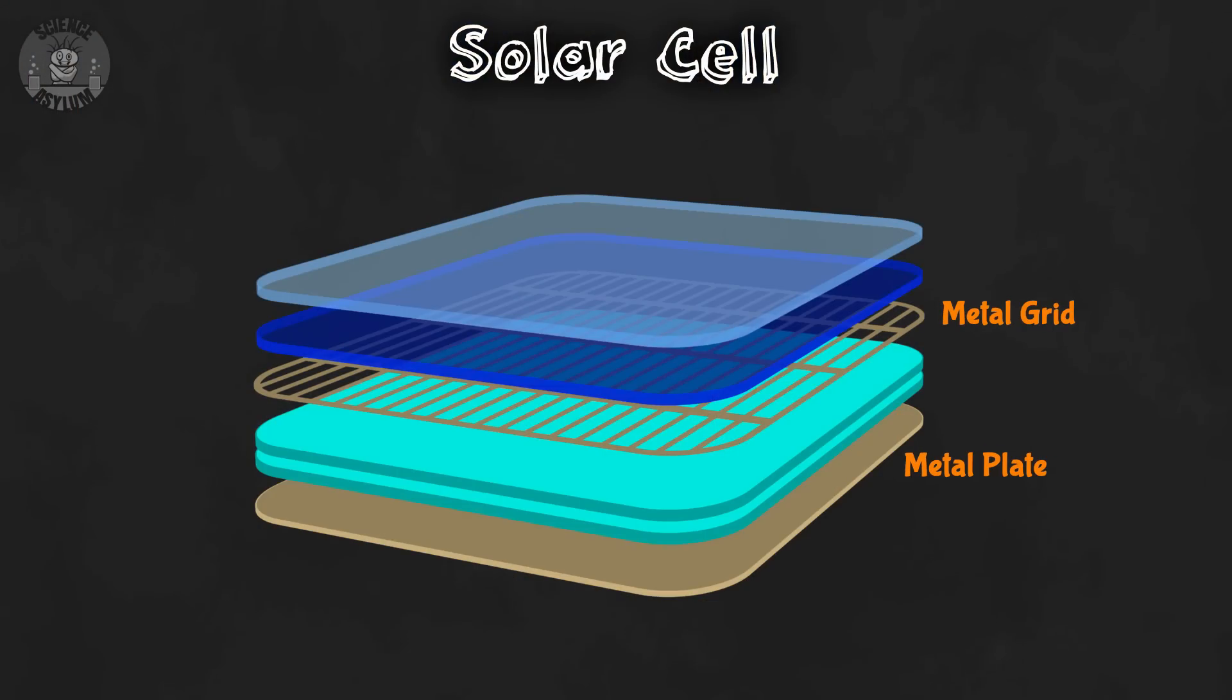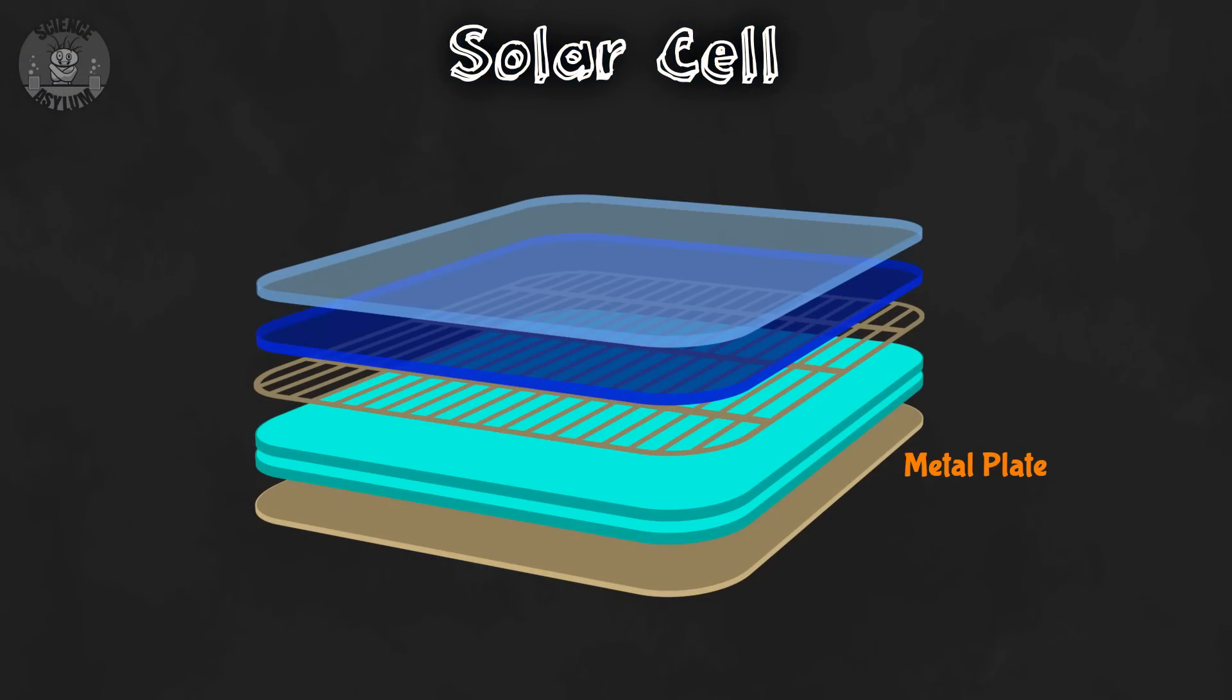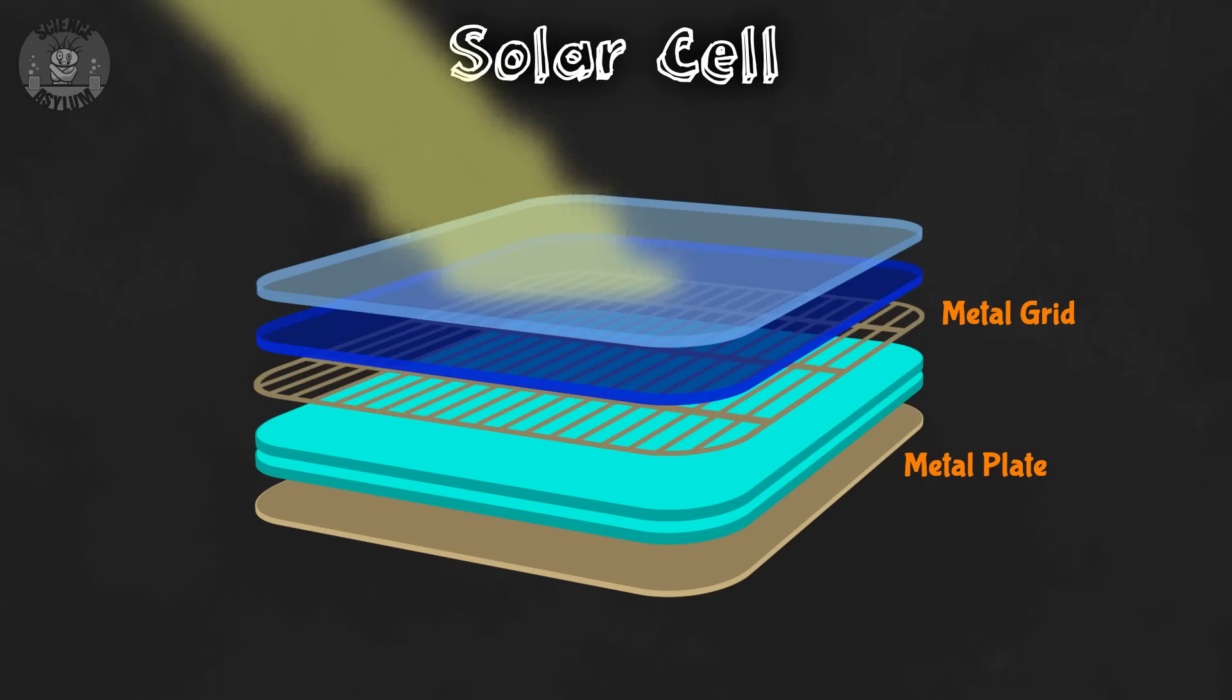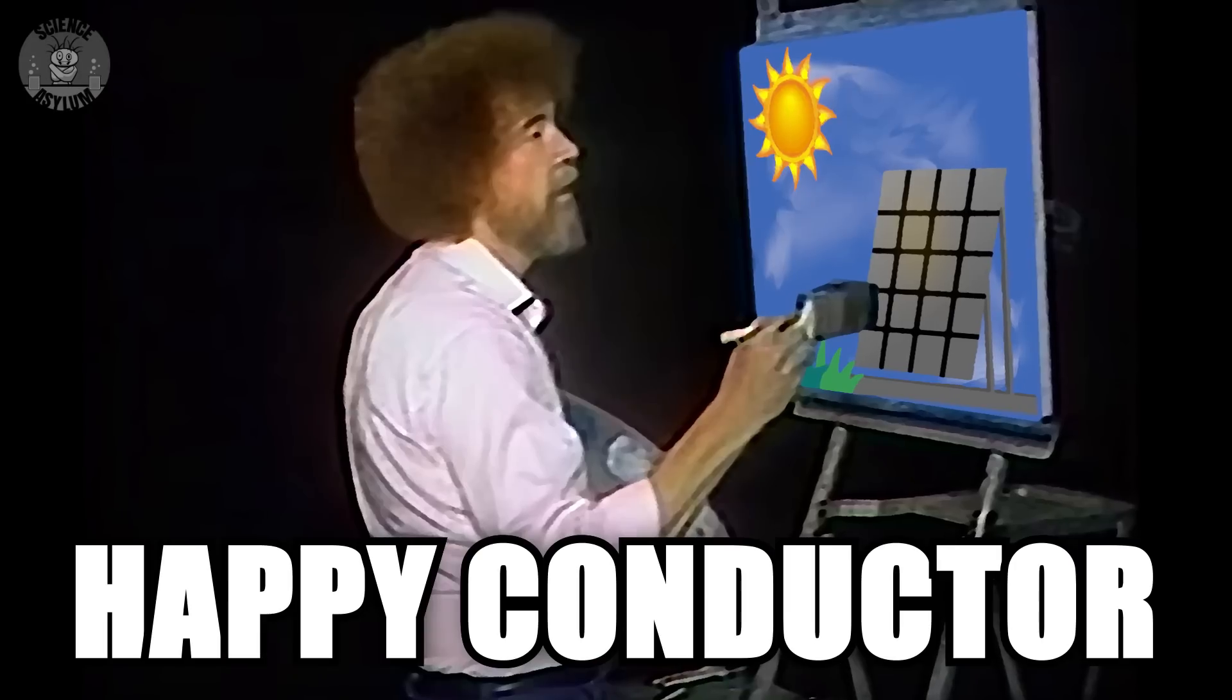We just need a couple of conductors to connect the silicon to a circuit, and bam, you've got yourself a solar cell. Why is the top one shaped like a grid? Oh, yeah, that makes perfect sense. I promise. The back conductor is a full plate, but the front conductor has to leave some space. Not enough space and the light can't get through to the silicon. Too much space and the electrons have to travel too far along the silicon. The grid pattern is a happy medium between the two. A happy little conductor. I'm such a dork.